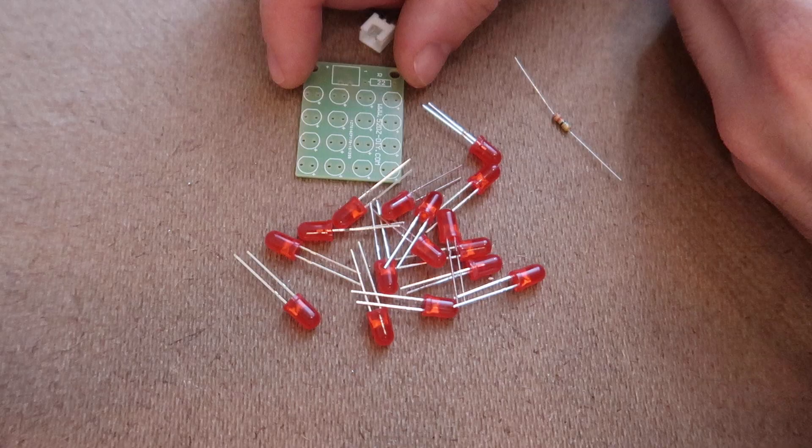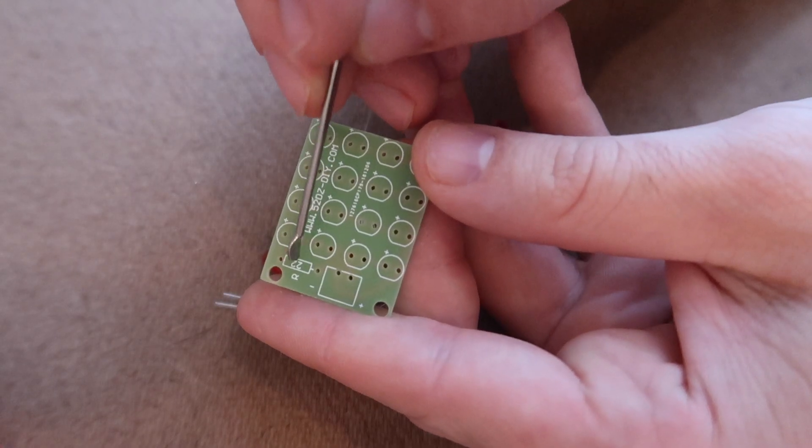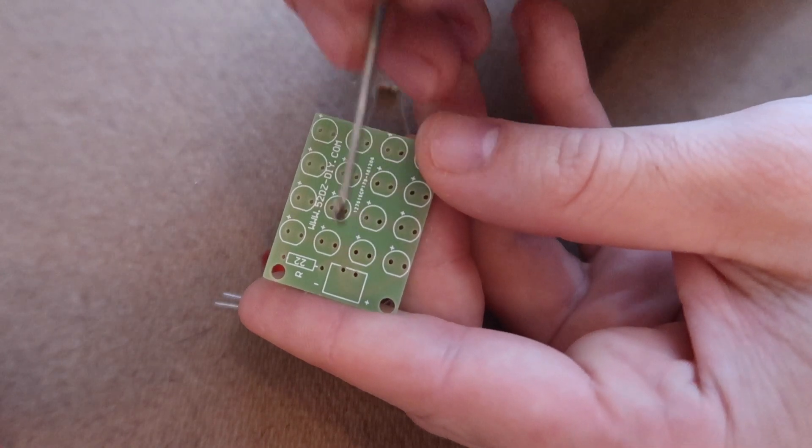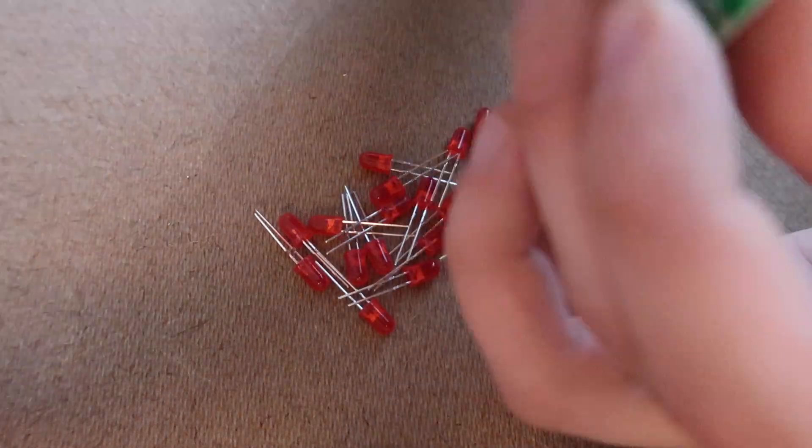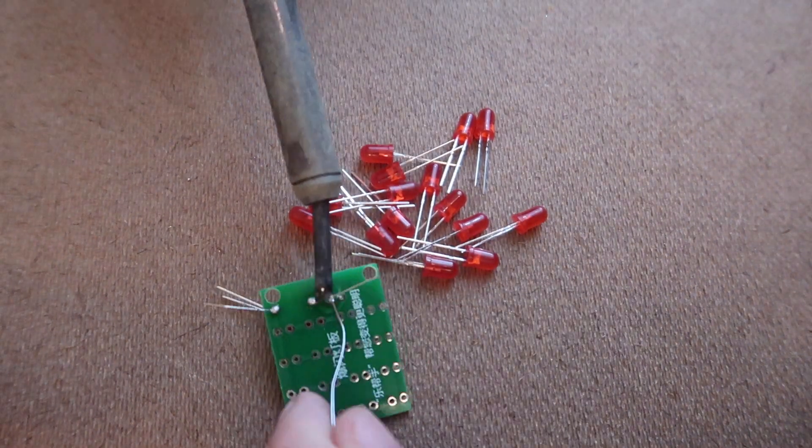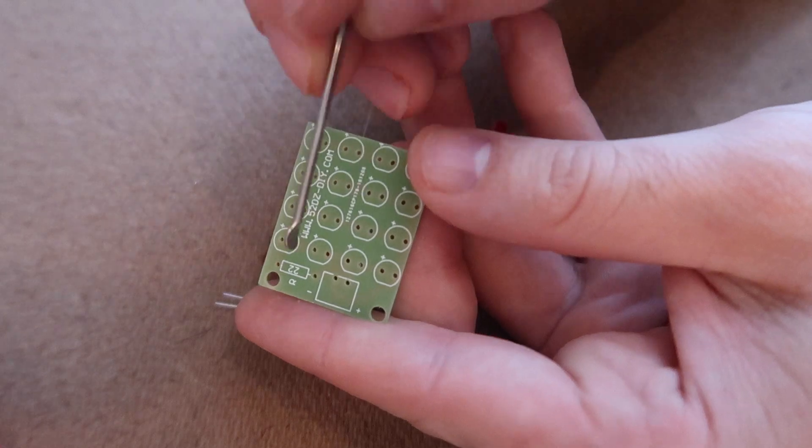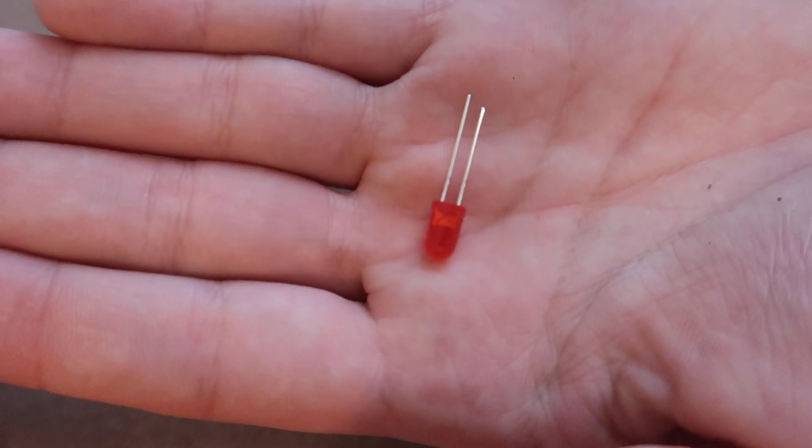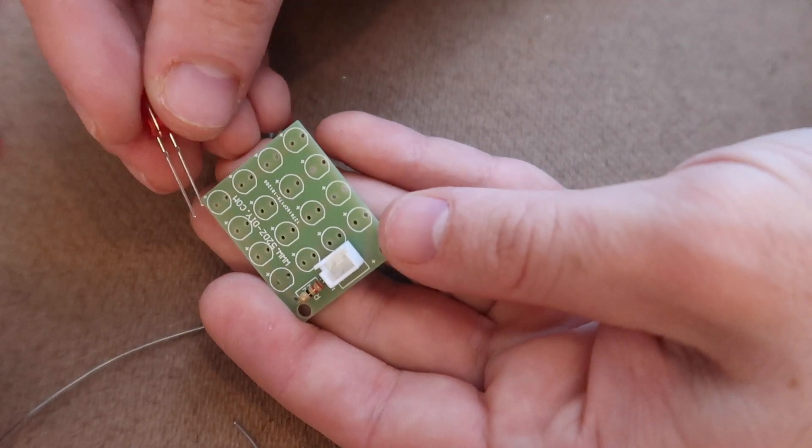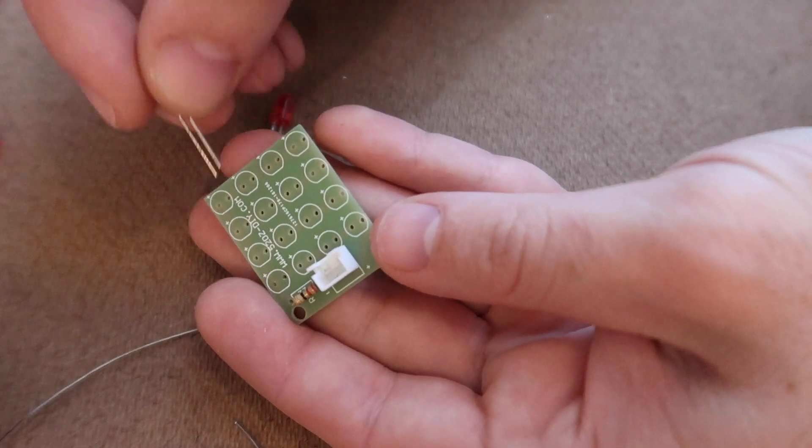Now we'll take care of the smaller boards, the 22-ohm resistor here and then the connection down there. All the LEDs go up here. Keep in mind that the longer one is the positive terminal. To make the soldering easier, I would recommend doing this one row at a time.